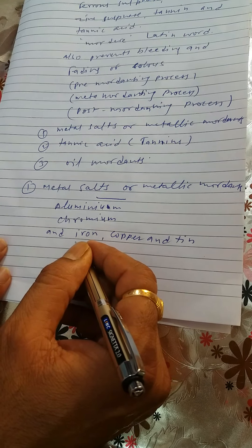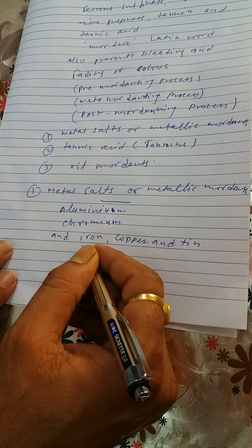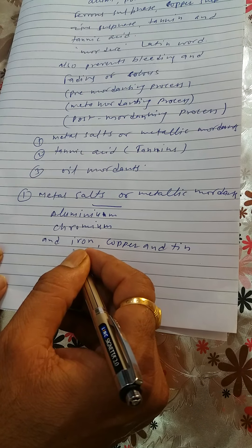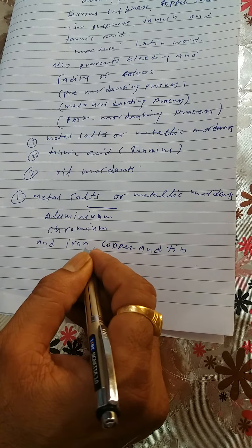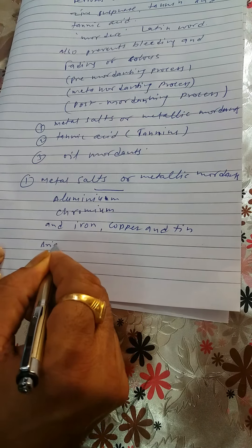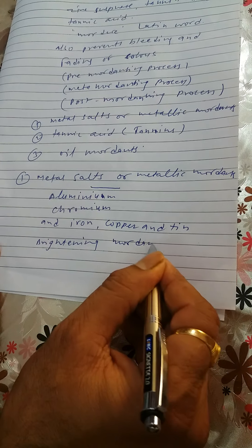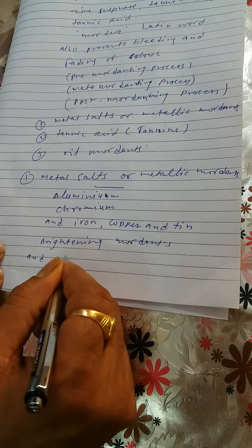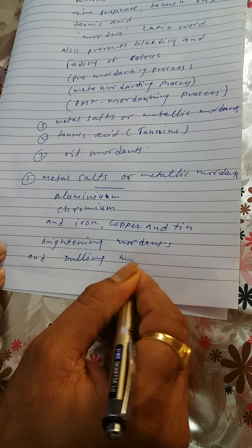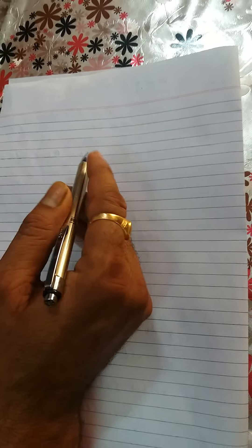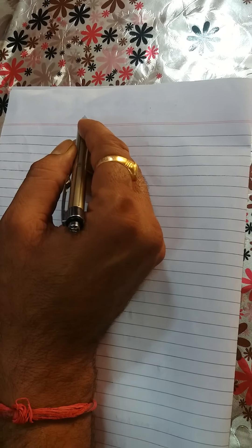Based on the final color produced with the natural dyes, these metallic mordants are further divided into two parts: brightening mordants and dulling mordants. Potassium dichromate and tin fall under the category of brightening mordants, while copper sulfate and ferrous sulfate are dulling mordants.